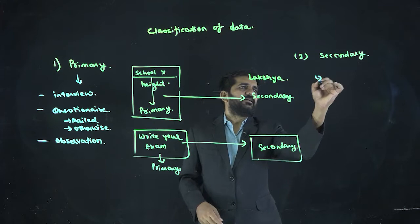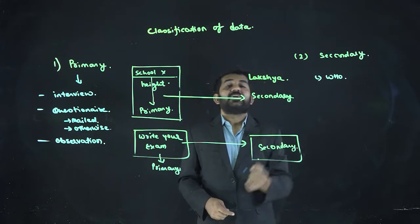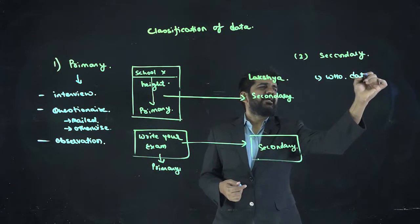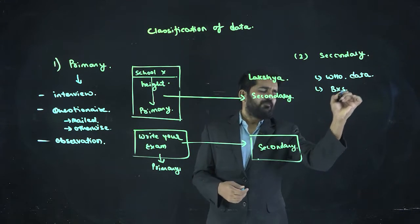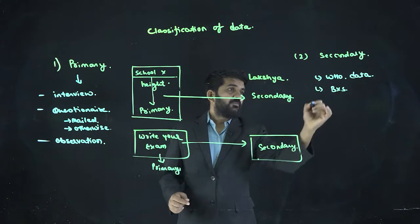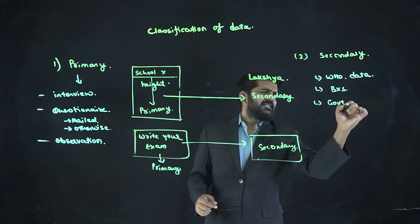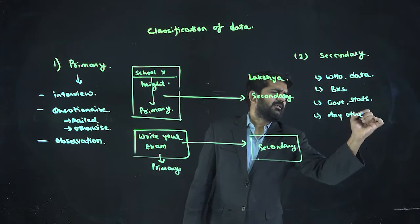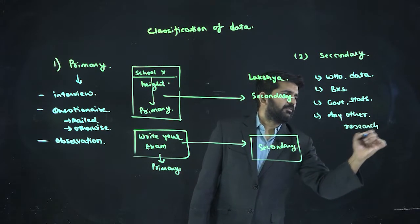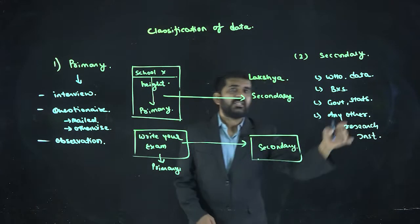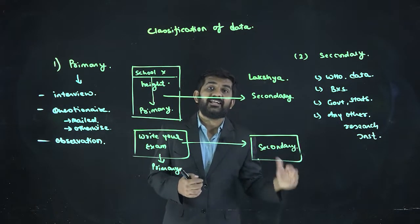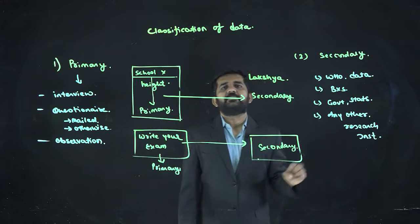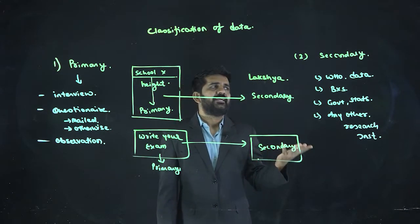Sources of secondary data. Right now, some data is provided of COVID-19 by World Health Organization. Data taken from balance sheets, government statistics department, from any other research institute. If you are using this data, ultimately that data is already created by that institute. That institute is a primary source of the data. You are using it, ultimately for you, it will be a secondary source of data.